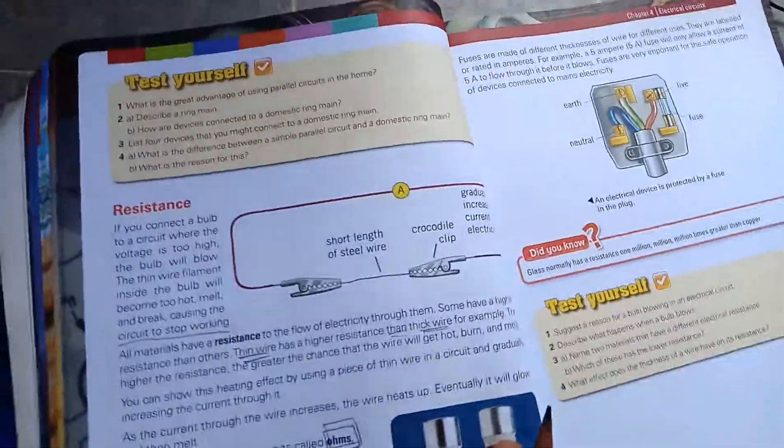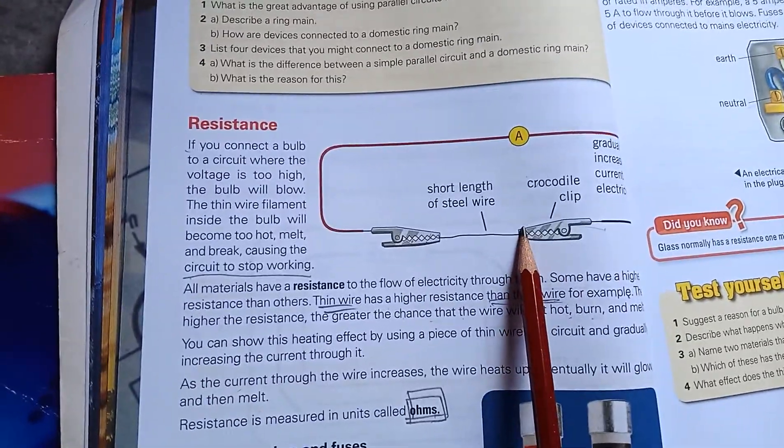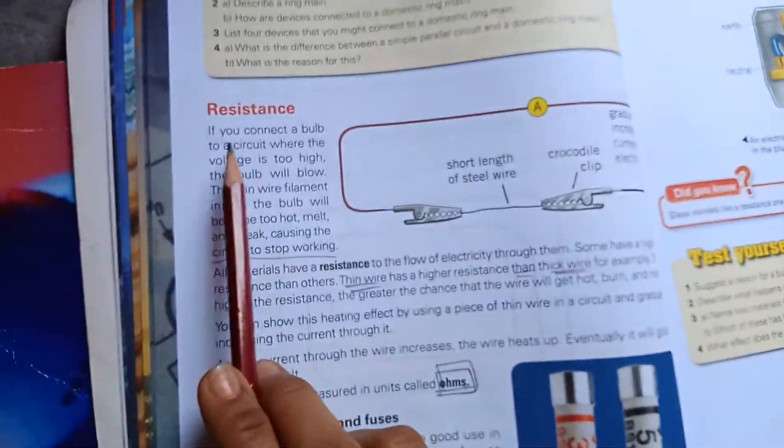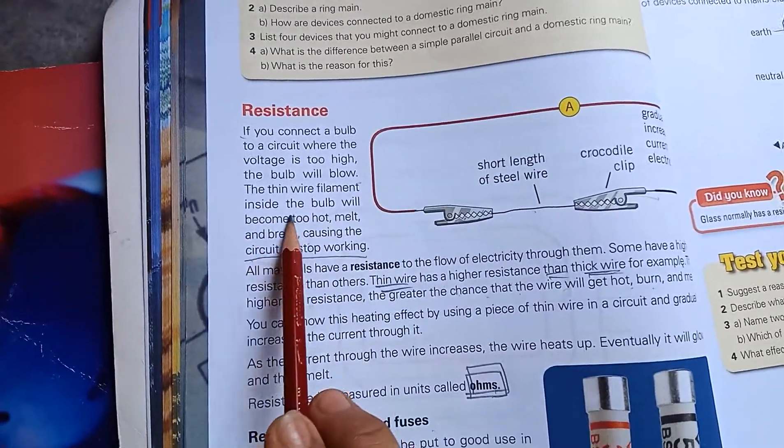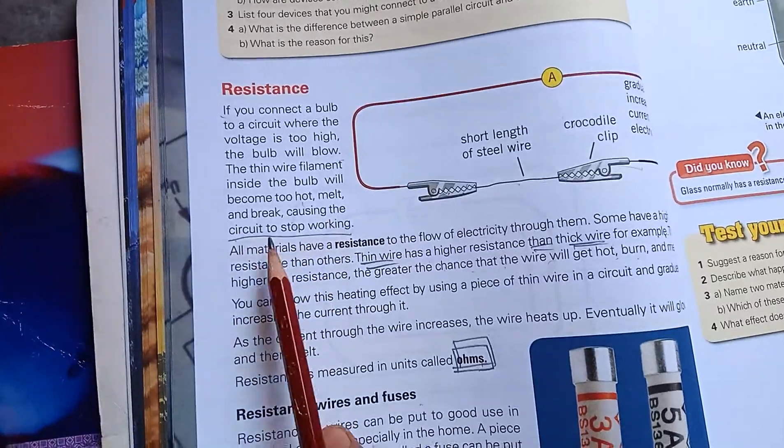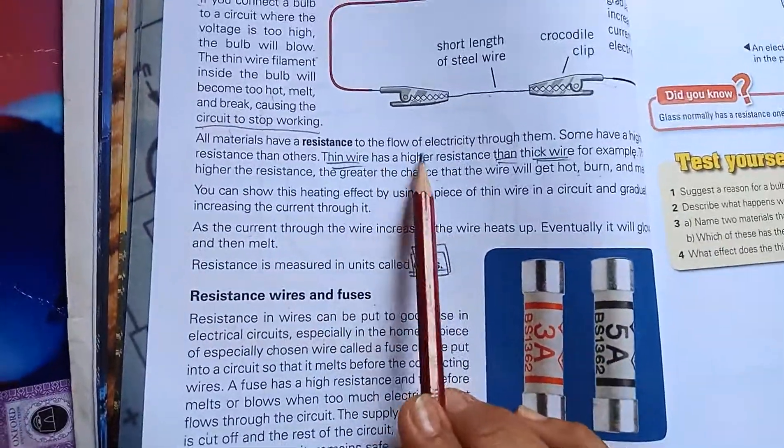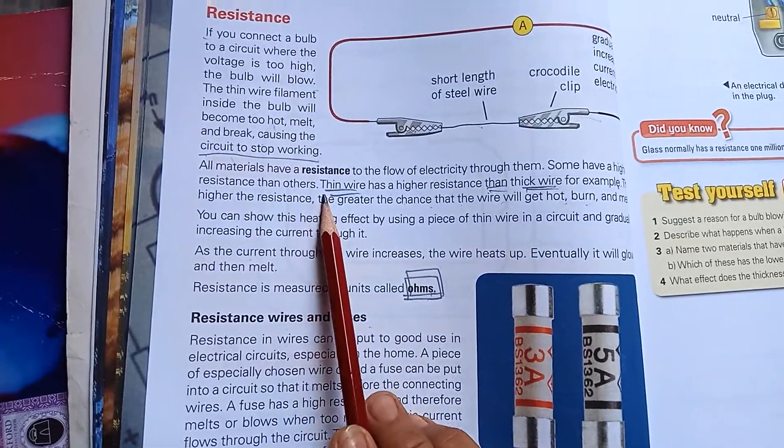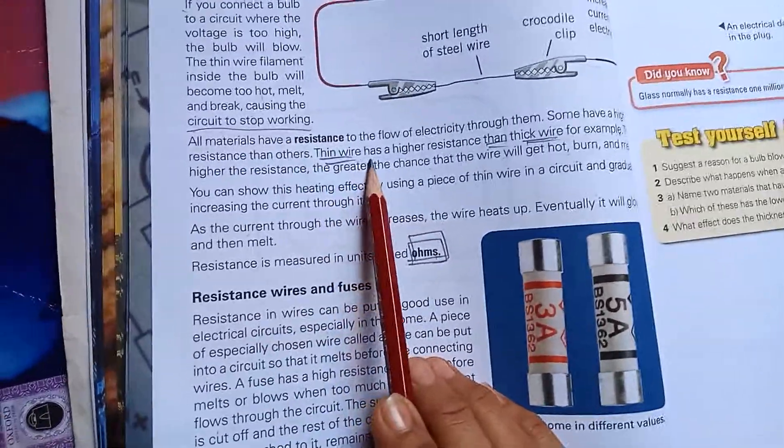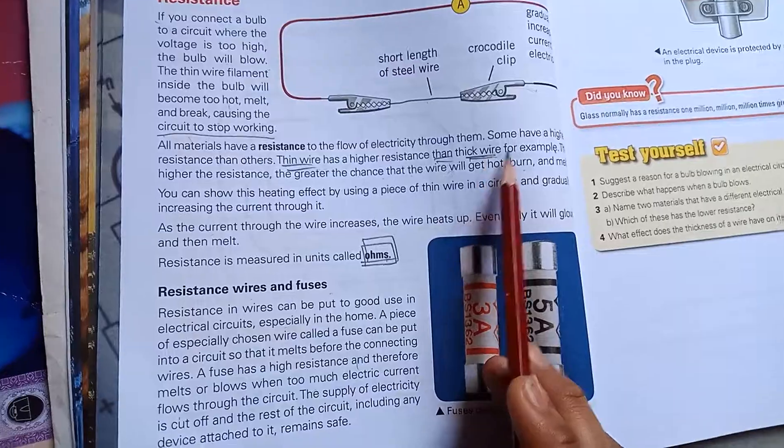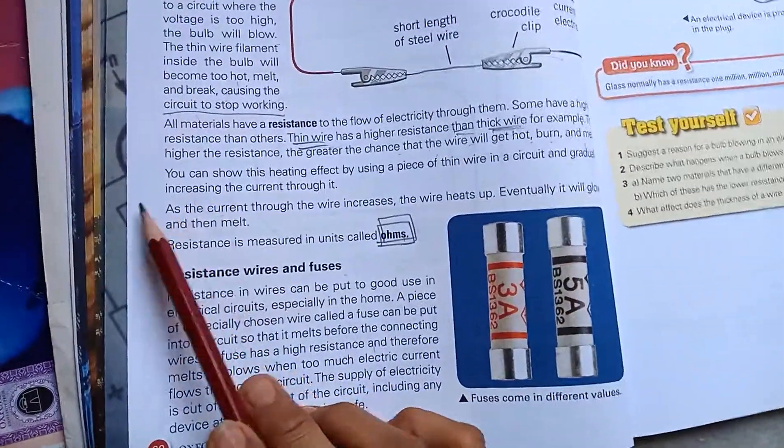What is resistance? Everything has a capacity of itself. If you connect a bulb to a circuit where the voltage is too high, the bulb will blow. The thin wire filament inside will become too hot, melt, and break, causing the circuit to stop working. All materials have resistance to the flow of electricity. Some have higher resistance than others. Thin wire has higher resistance than thick wire. Thin wires can become hotter than thick wires.